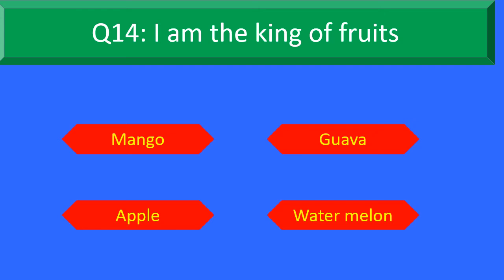I am the King of Fruits — Option A: Mango, Option B: Guava, Option C: Apple, and Option D: Watermelon. Your time starts now.